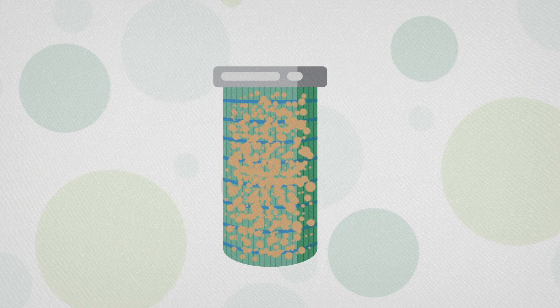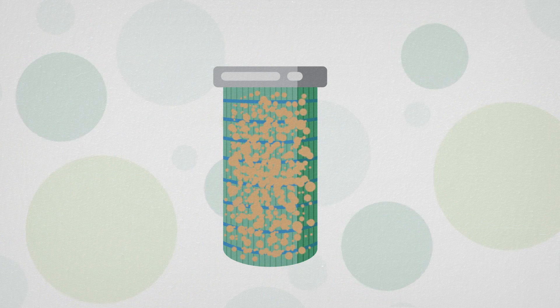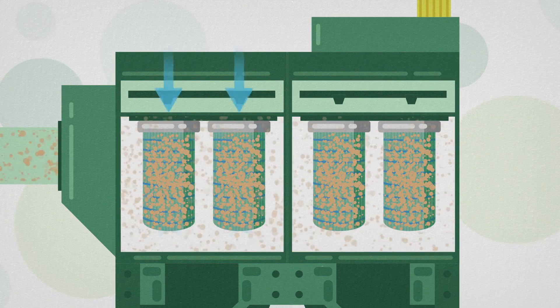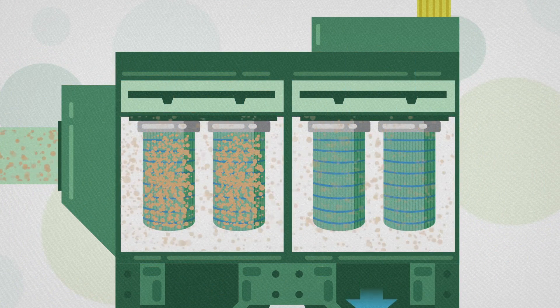Dust collectors shoot quick bursts of compressed air into the center of each filter. This air blasts out through the filter media, using enough force to loosen and remove the caked-on dust.